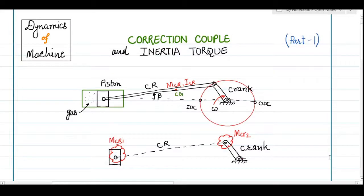Welcome to this lecture of Dynamics of Machines. Today we are going to cover two complicated topics: correction couple and inertia torque. These two topics always remain confusing, and whenever we try to solve a problem of inertia torque we get confused about the direction of different torques. Here I am showing a picture of a piston-cylinder assembly which we use for engines, ultimately trying to get the dynamic conditions for our automobile engines.